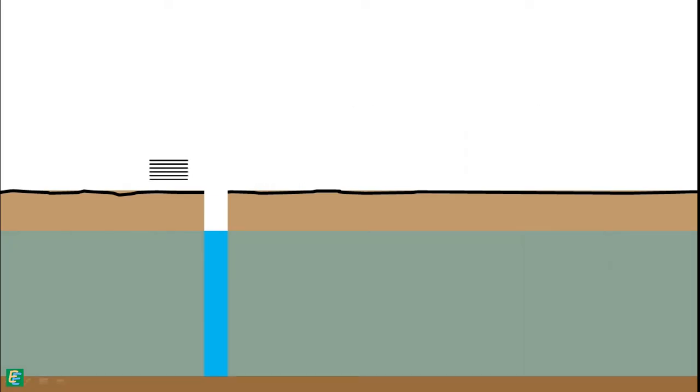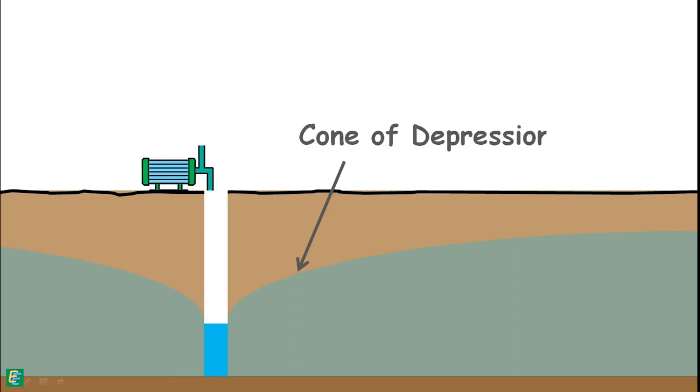Water is pumped out through this well and as a result, the groundwater table lowers. The profile of the water table that may be horizontal at the beginning now acquires this kind of shape. That is called cone of depression.